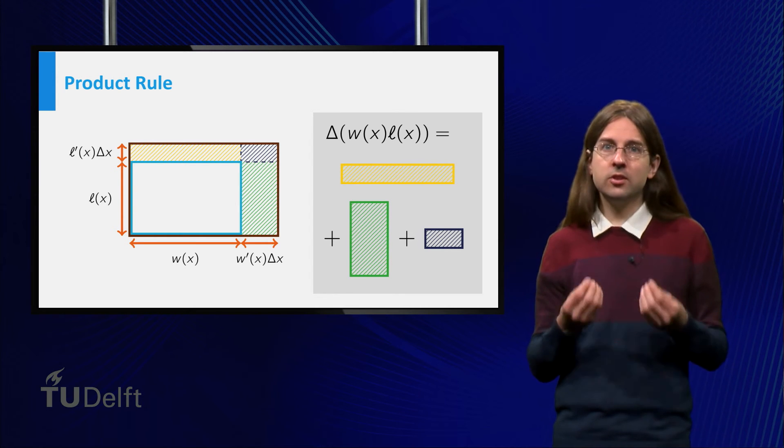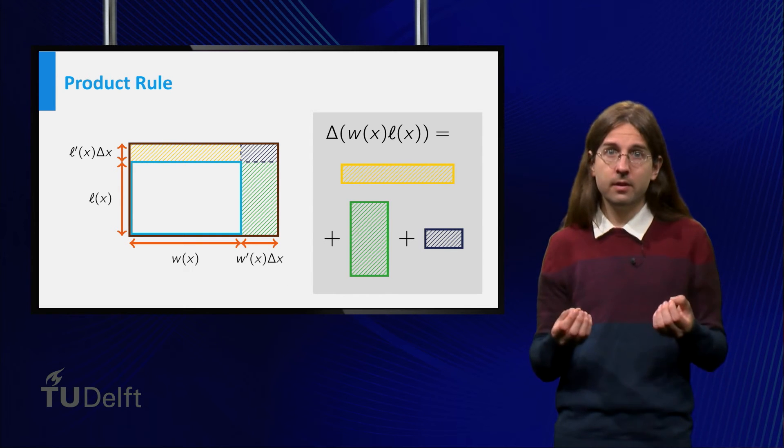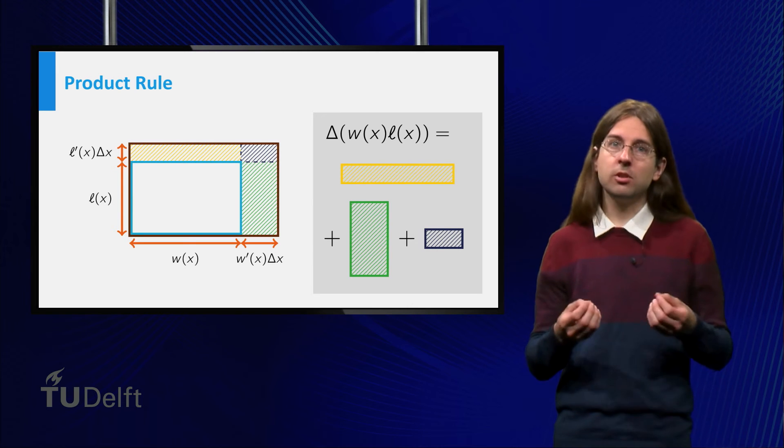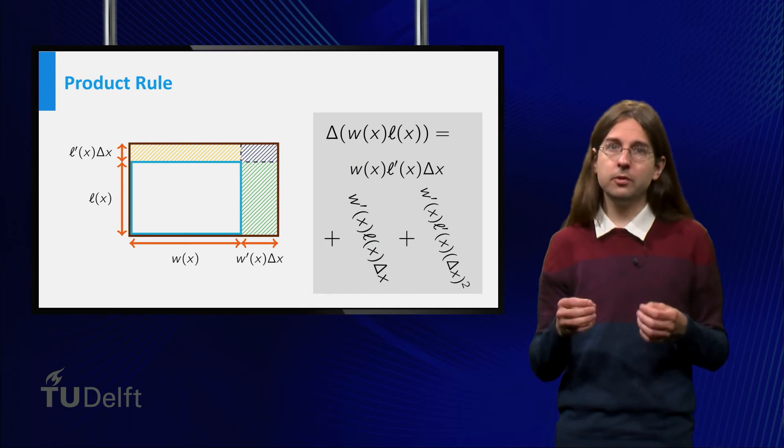Now, observe that the change in width is approximately the derivative of the width times delta x. And similarly for the change in length. We can use this to calculate the area of the three rectangles.